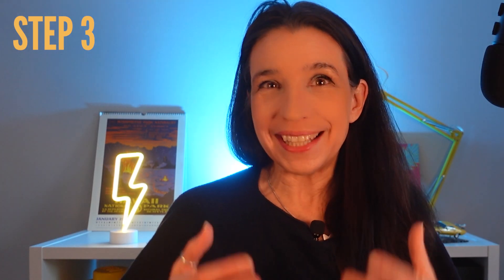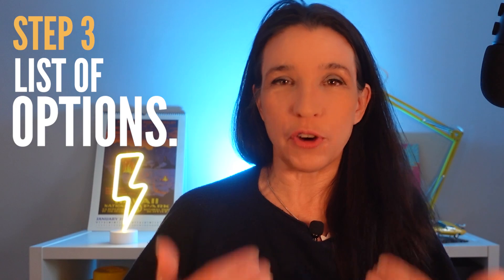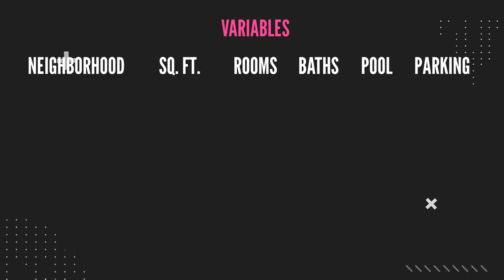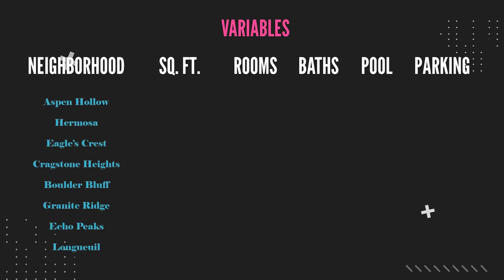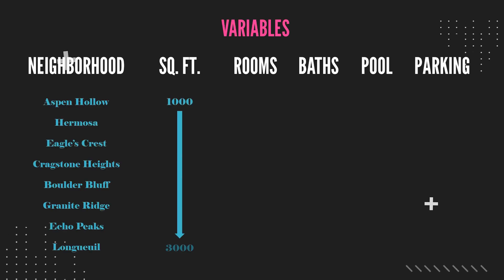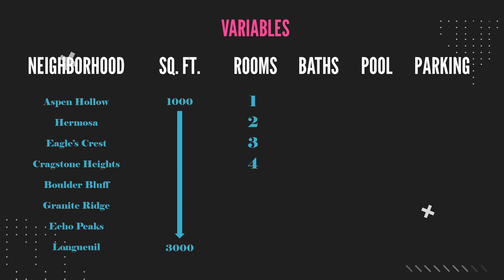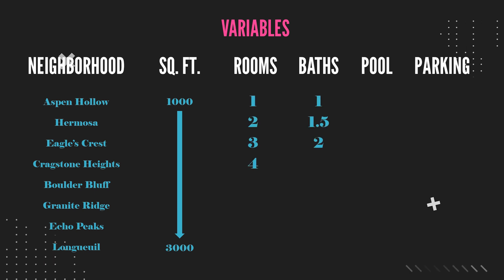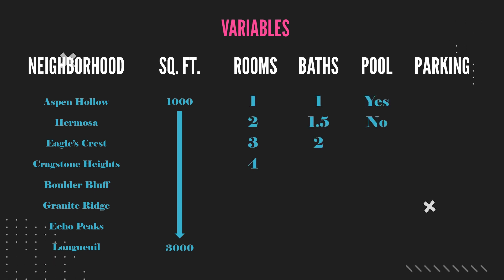Third, generate a list of options for each variable. Here's a list of eight possible neighborhoods. Square footage can be anywhere between 1,000 and 3,000. Rooms can be 1, 2, 3, or 4. Baths can be 1, 1 and a half, or 2. Pool can be yes or no. And parking spaces can be 0, 1, 2, or 3.